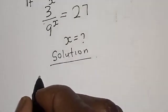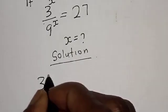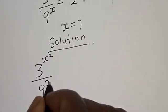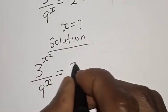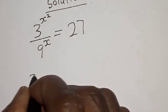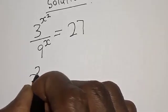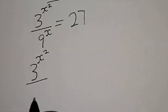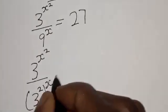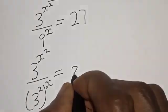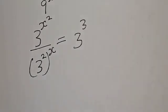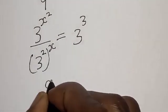We have the equation: 3 raised to power s squared divided by 9 raised to power s is equal to 27. This is the same thing as 3 raised to power s squared divided by 3 squared raised to power s, which is equal to 27.